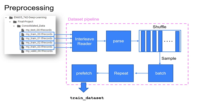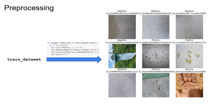In addition to converting images to TF Records, we also enhanced our data pipeline using interleaving, parsing, shuffling, batching, and prefetching before training the dataset. Here we can see sample plots of nine images taken from the first batch of the training data set.